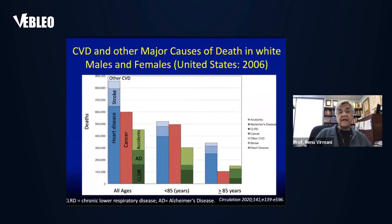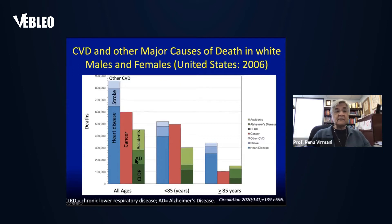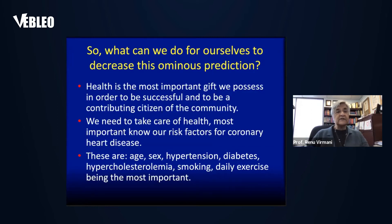Cardiovascular disease is the largest cause of death across all ages in both white males and females, followed by stroke and other cardiovascular diseases. After heart disease comes cancer, then accidents, chronic lower respiratory disease, and Alzheimer's disease. It varies by age — less than 85 and greater than 85 years — being higher in those under 85 as the older population also decreases.